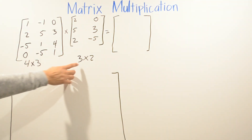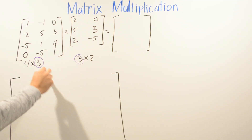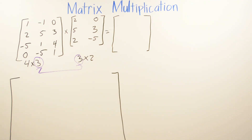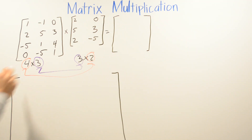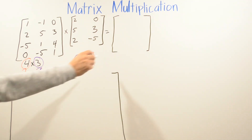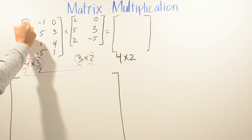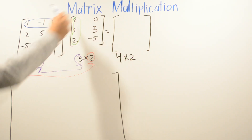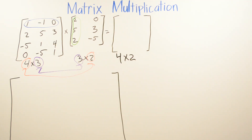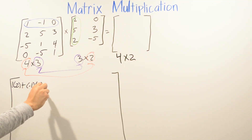In this final example, we have a 4 by 3 matrix multiplied by a 3 by 2 matrix. The inner dimensions are both 3, so multiplication is possible. The resulting matrix will be 4 by 2. We start by multiplying the first row of the first matrix by the first column of the second matrix: 1 times 2, plus negative 1 times 5, plus 0 times 0.